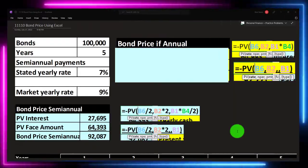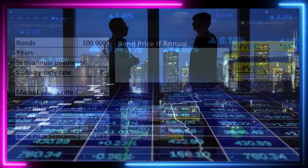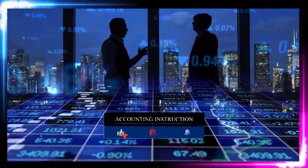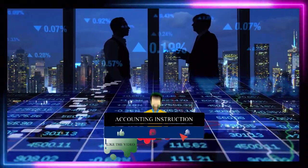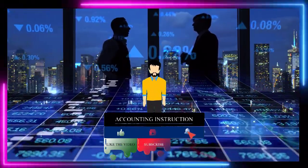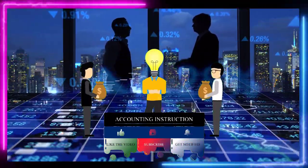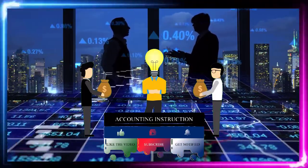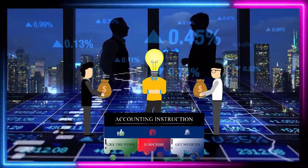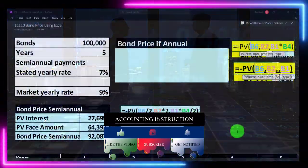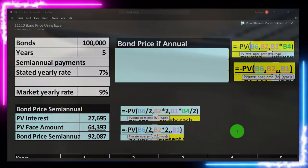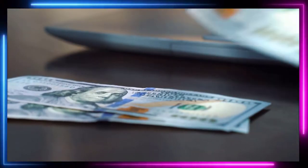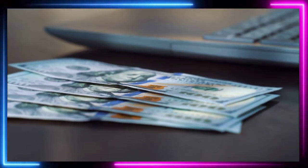We can think about investing in a bond as lending money to an organization — the issuer of the bond — typically either a government entity or a corporation. In return for lending them money, we want earnings on it, kind of like rent. That's going to be the interest payments we receive.